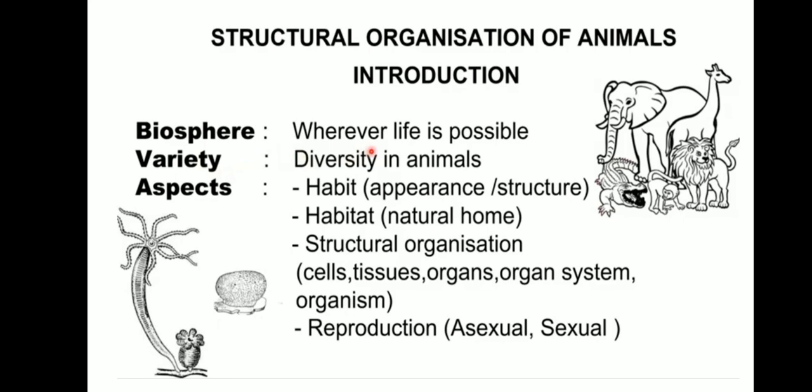Habit is the appearance or structure — how the animal is. Habitat is where the animals live; that's the home for the animal. Structural organization means the arrangement of the organs in an organism — it may be a cell, tissue, organ, organ system, or organism. This is how animals are organized, in a certain kind of arrangement.